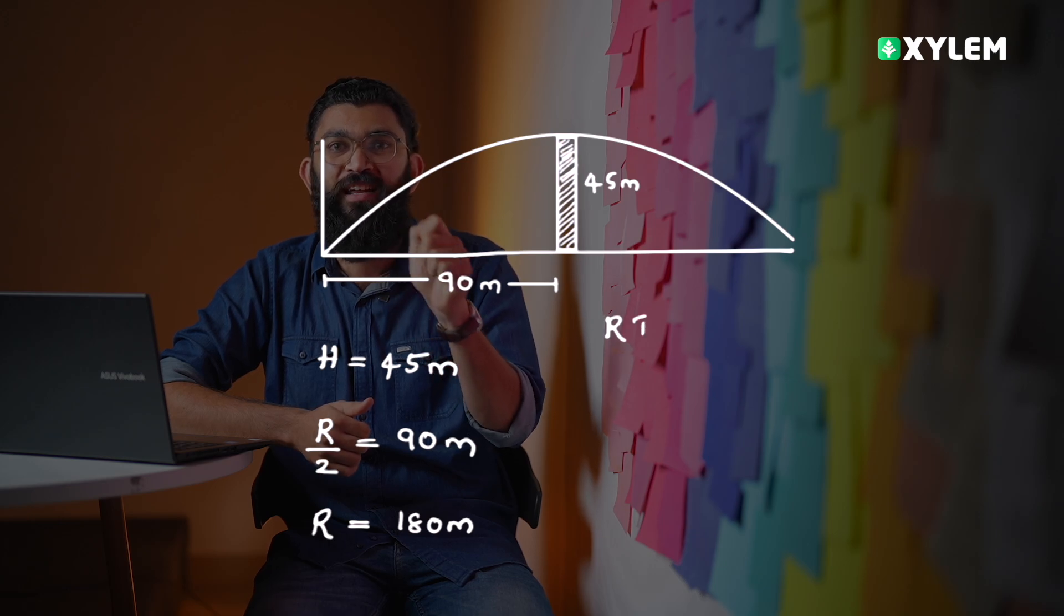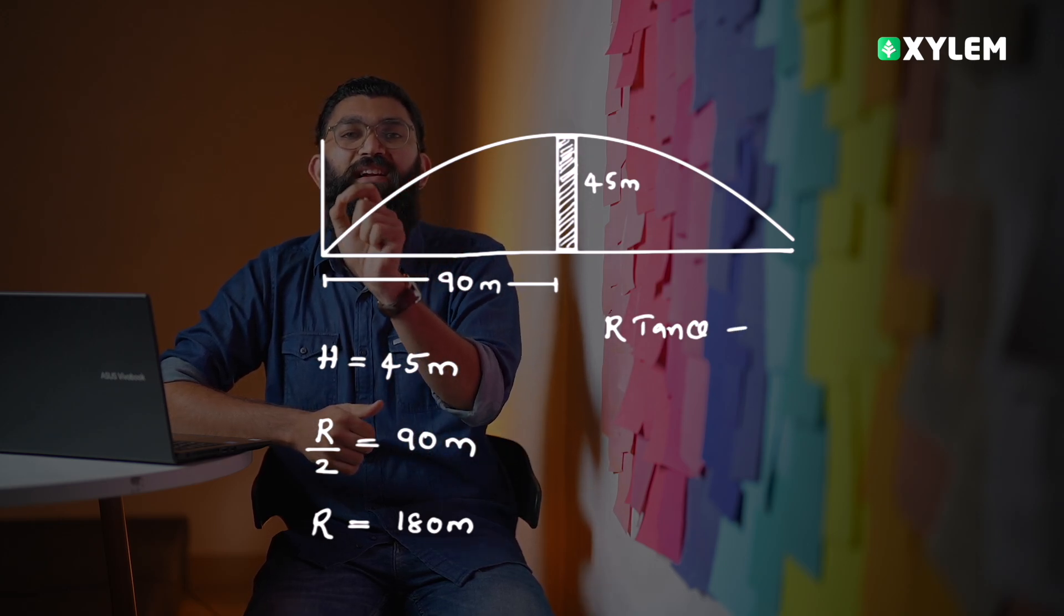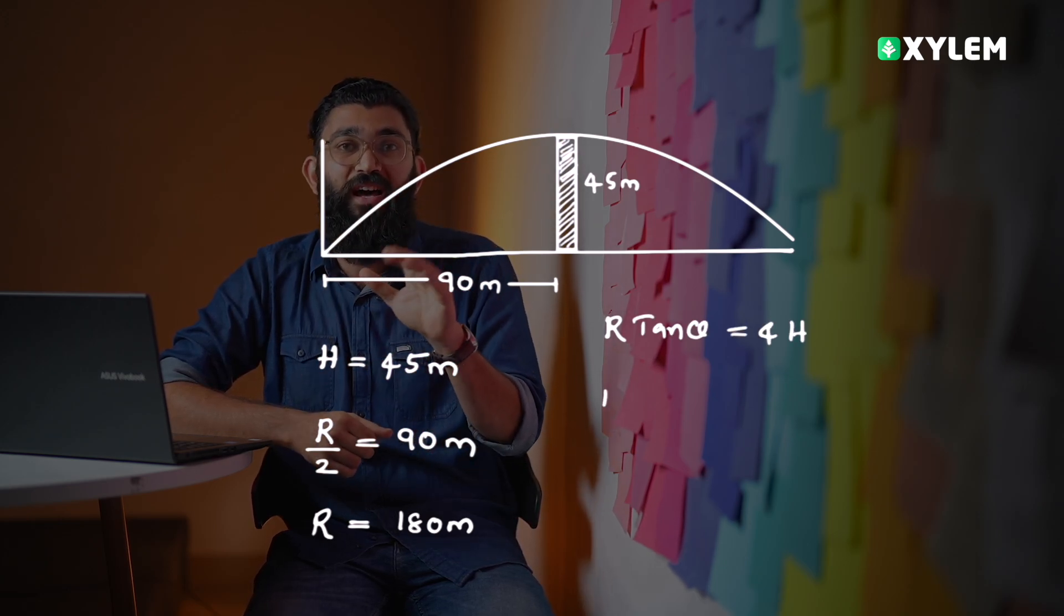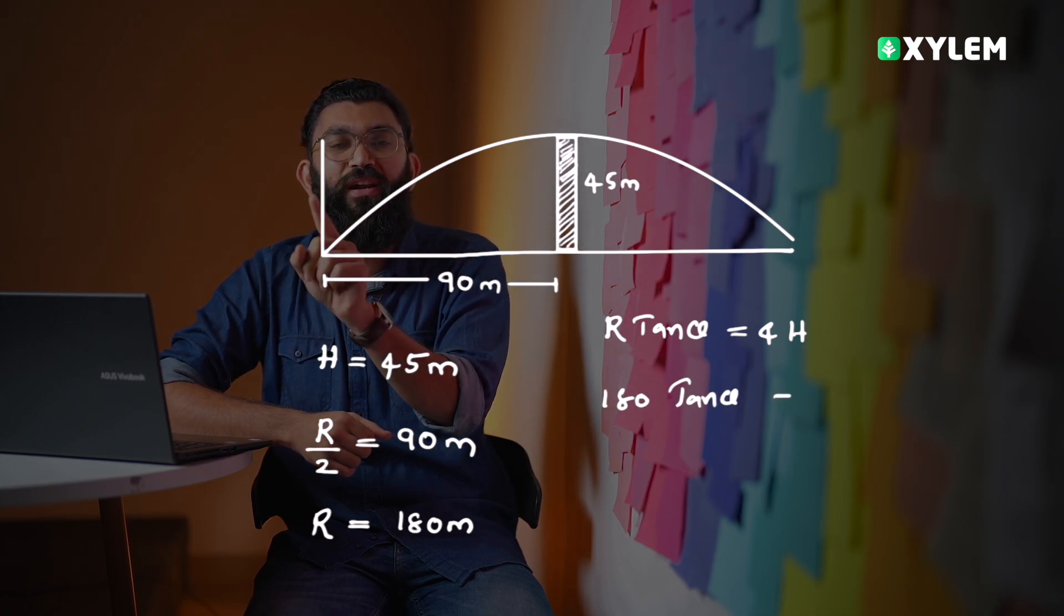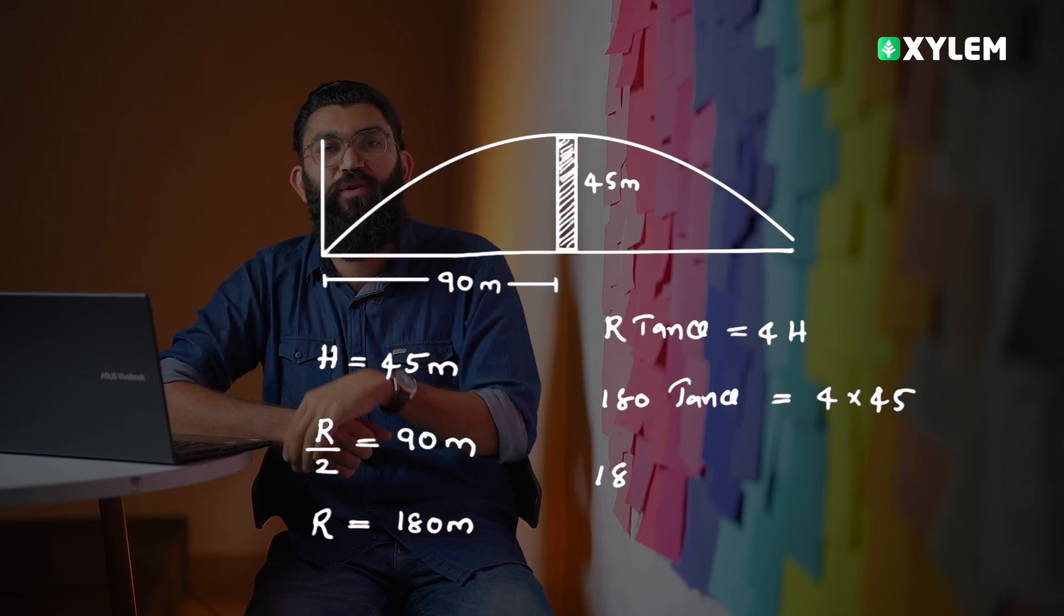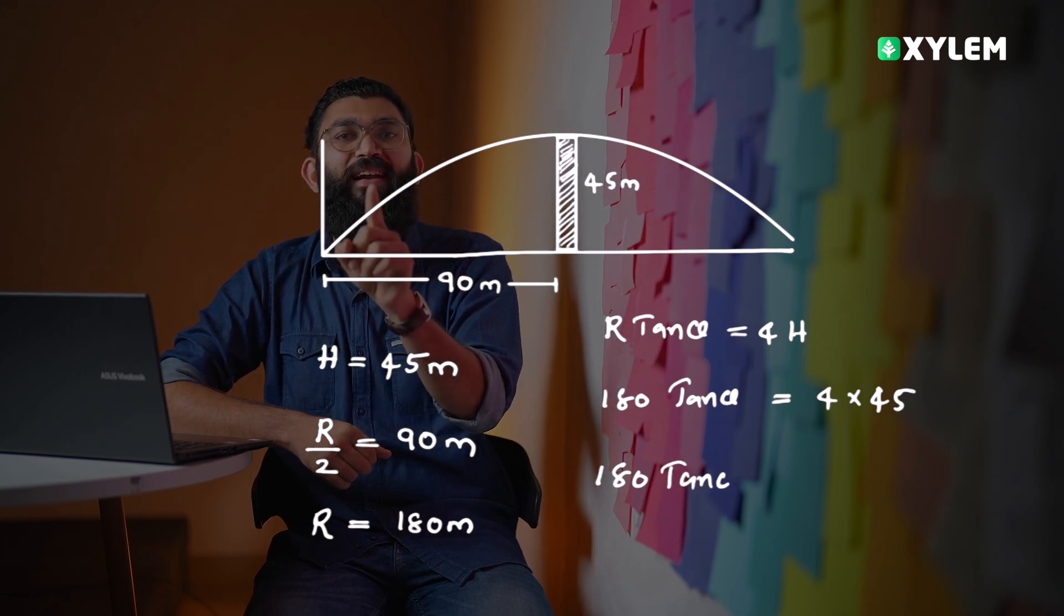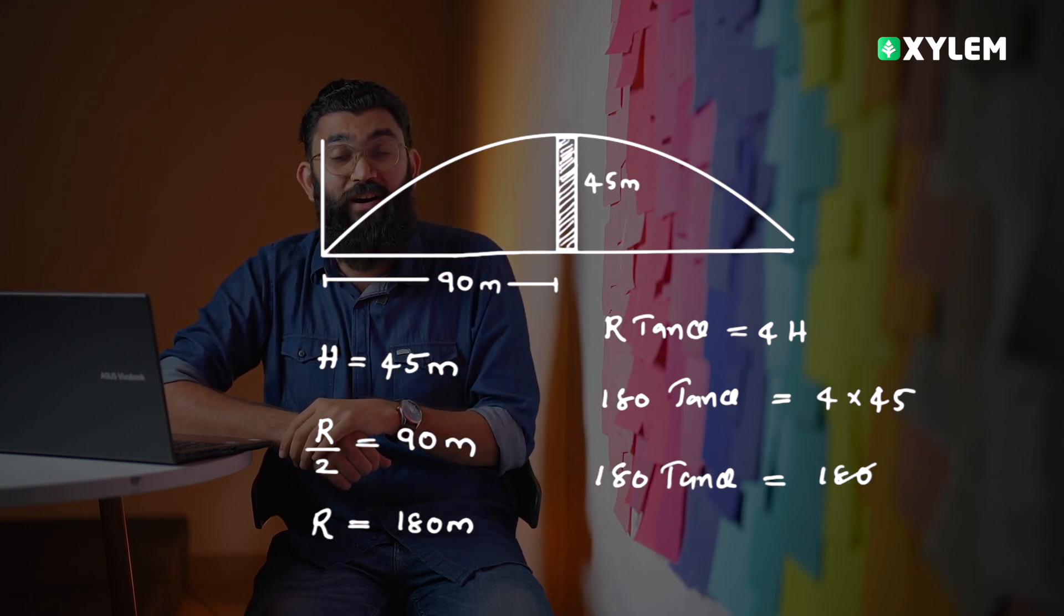We have a golden shortcut equation that is R tan theta equals 4H. R is 180, so 180 tan theta equals 4 into 45. 4 into 45 is again 180, so 180 tan theta equals 180. 180 and 180 get cancelled out.